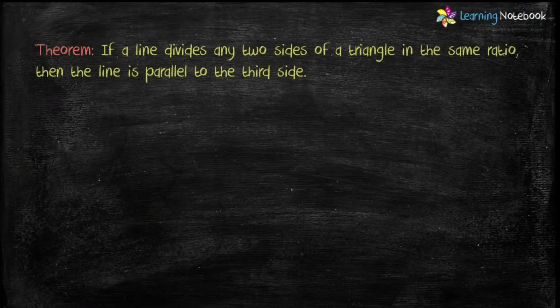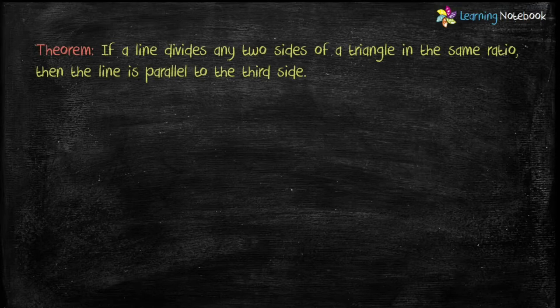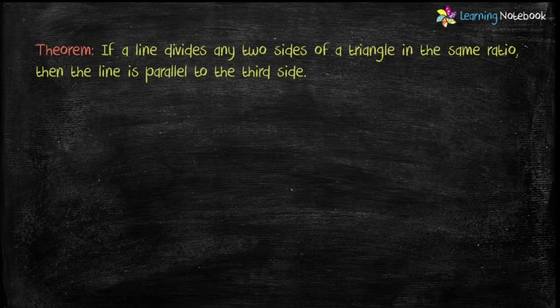Converse of basic proportionality theorem says, if a line divides any two sides of a triangle in the same ratio, then the line is parallel to the third side.